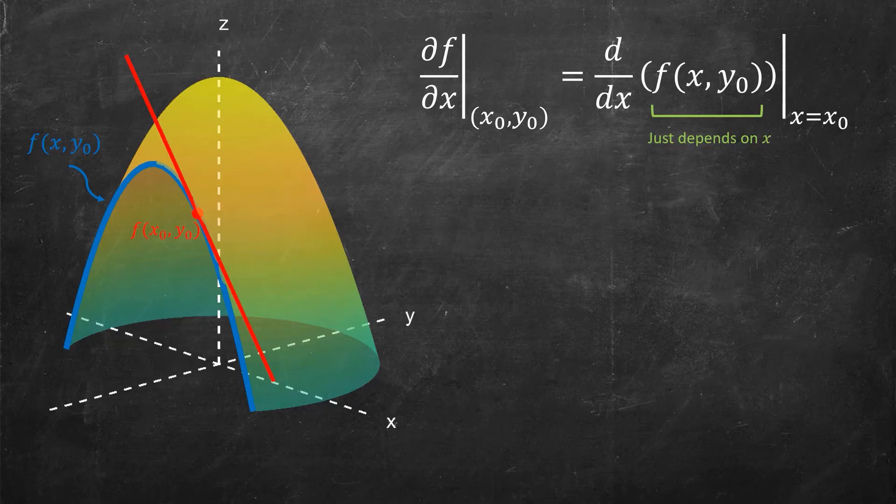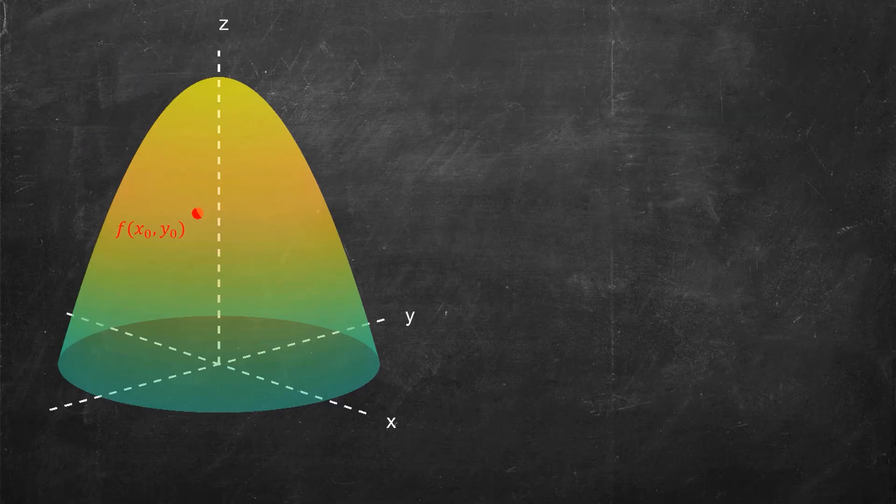This is the partial derivative with respect to x. We can also investigate the partial derivative with respect to y. So let's begin in the same place. I have the graph of my function, I have a point specified.